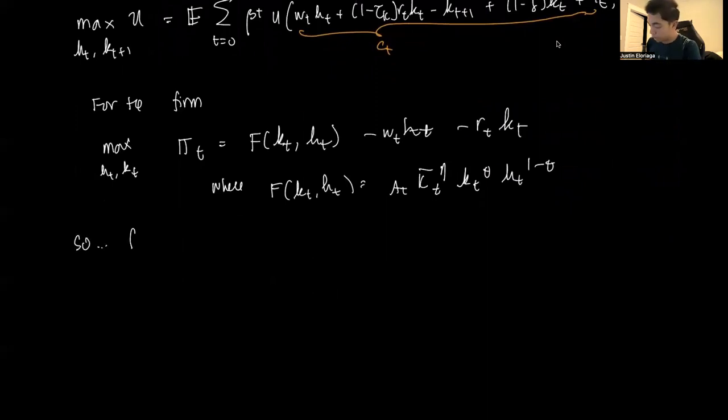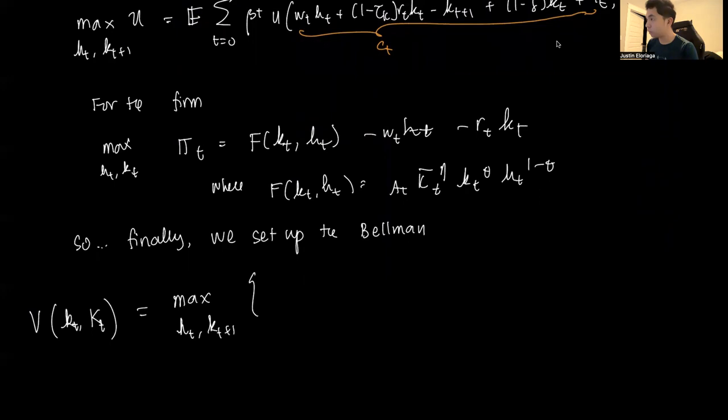So finally, we set up the Bellman equation. The Bellman is a simple thing, so we start with a value function, which is a function of the individual state and the aggregate state, that's K and K bar, and the goal is to maximize Kt plus 1 of U.